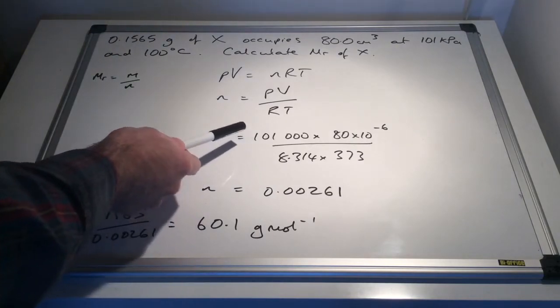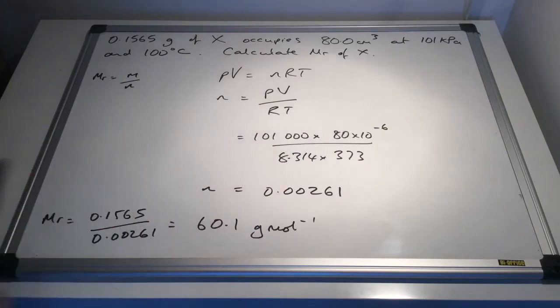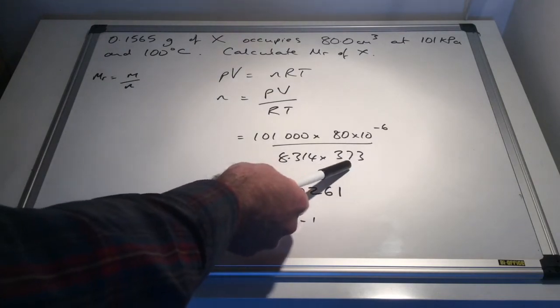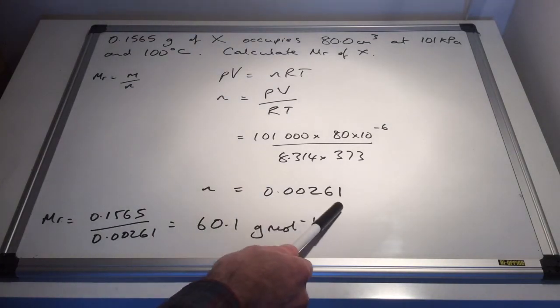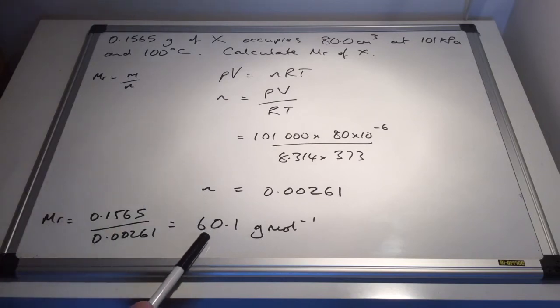So straight to here, 101,000 pascals times the volume in cubic meters would be 80 times 10 to the minus 6, divided by the gas constant, 100 degrees C again, so 373 Kelvin, gives us the moles of 0.00261, and when you divide the mass by the moles, we get an MR to one decimal place of 60.1 grams per mole.